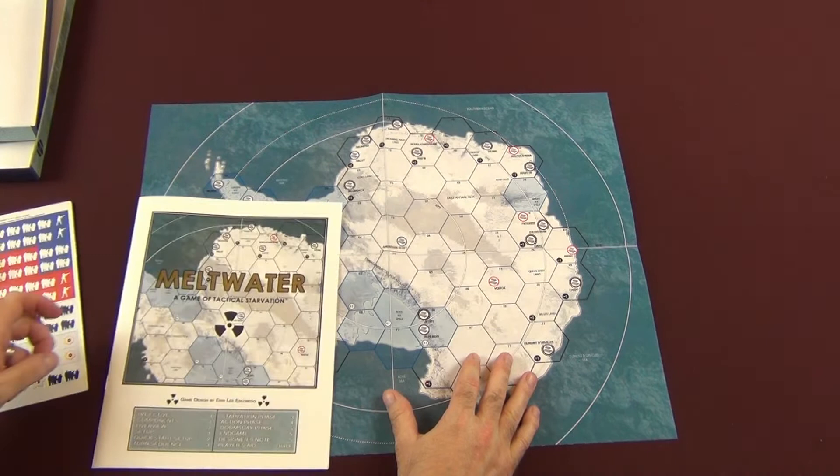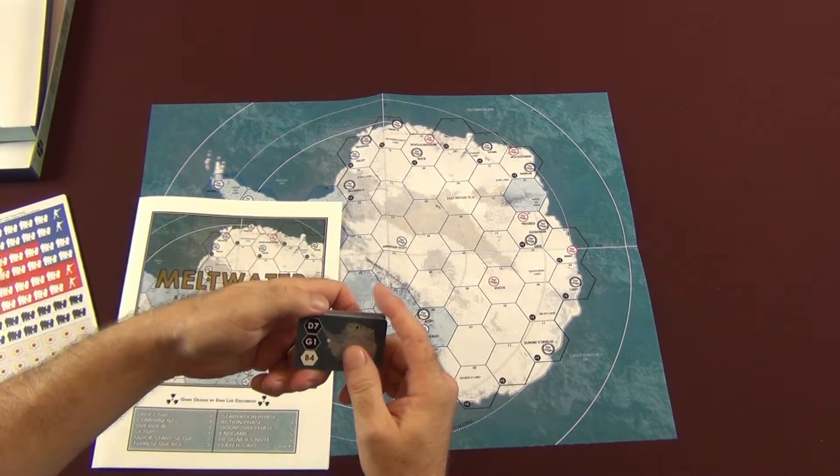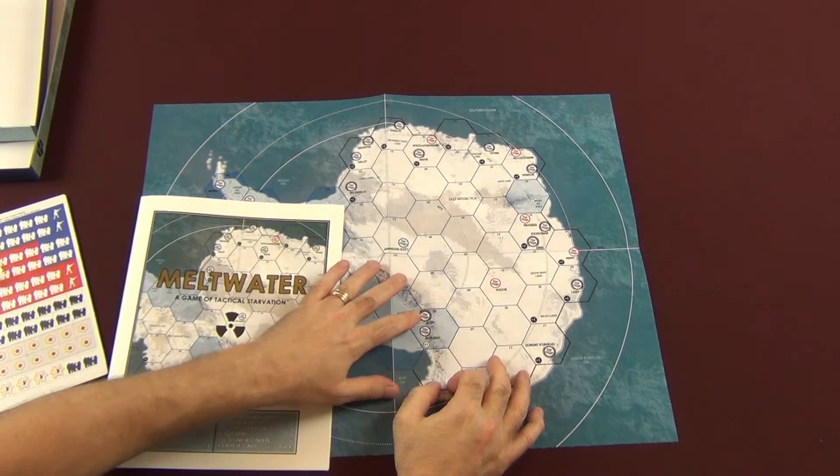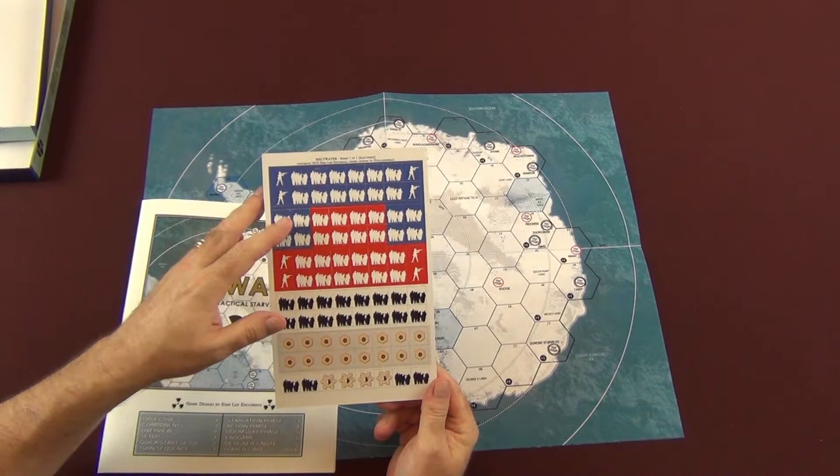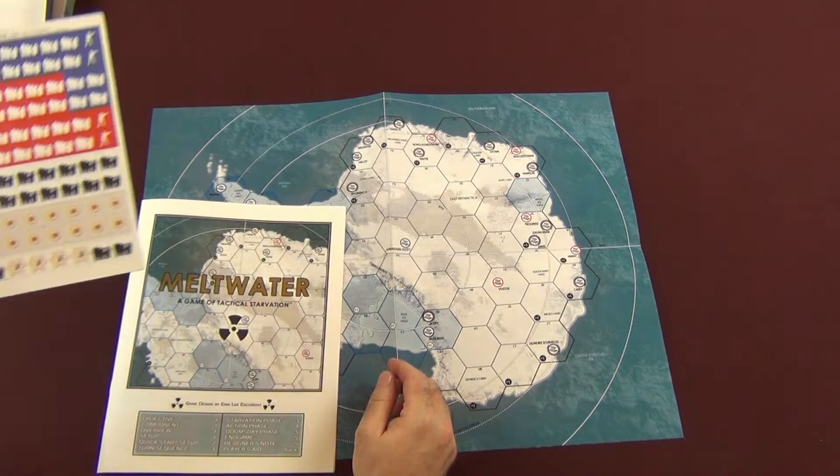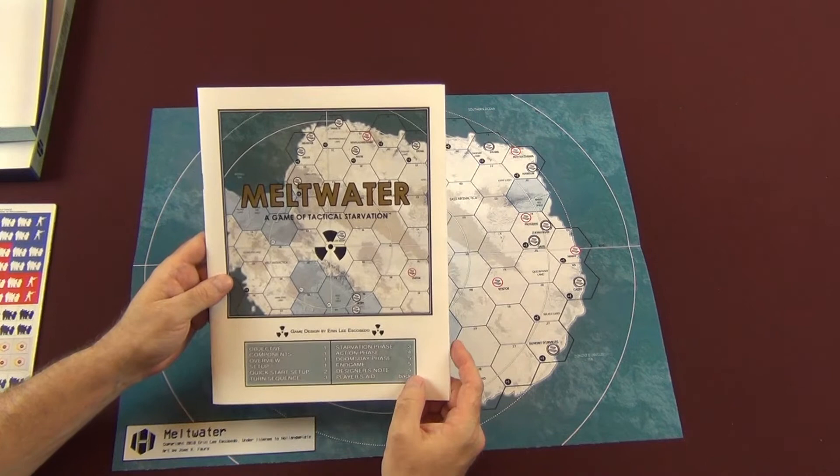This will shrink over time using the doomsday deck. This doomsday deck here will tell you areas on the map that will become contaminated and that will just keep shrinking over time. And you've got your counters. You've got your NATO and Warsaw Pact or American Soviet Union units, and then you have civilians as well, and some admin counters.